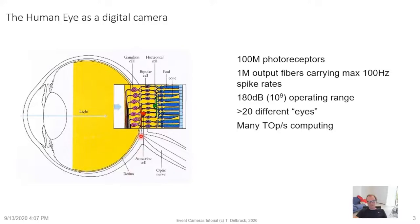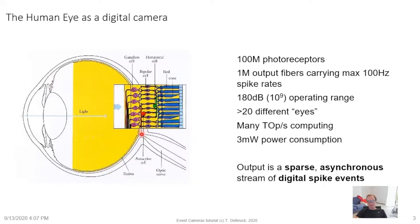The eye does many teraops per second and burns only about three milliwatts — compare that with several hundred milliwatts for a state-of-the-art smartphone image sensor alone, without any computation. For the purpose of this tutorial, the output relevant to event cameras is a sparse asynchronous stream of digital spike events representing dynamics of the input, particularly brightness changes. This represents a large class of ganglion cells — especially in the peripheral retina — that only respond to transient signals.